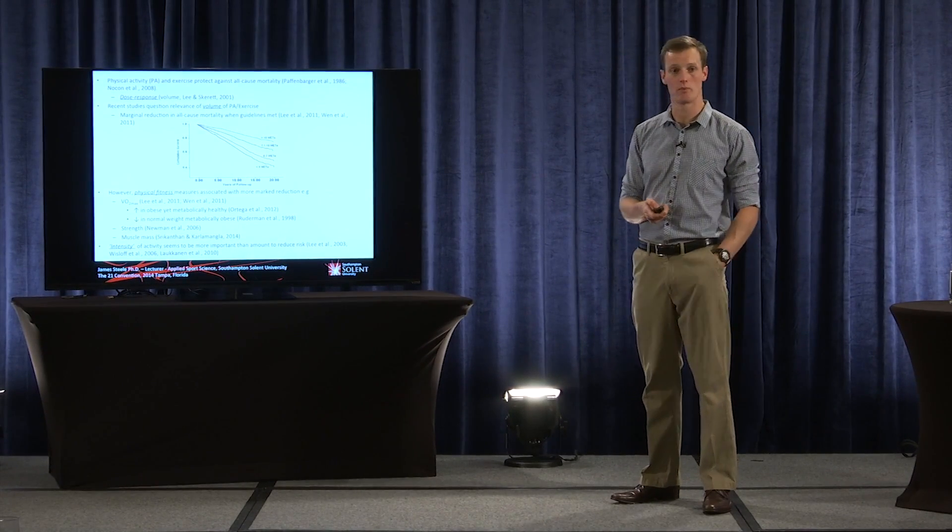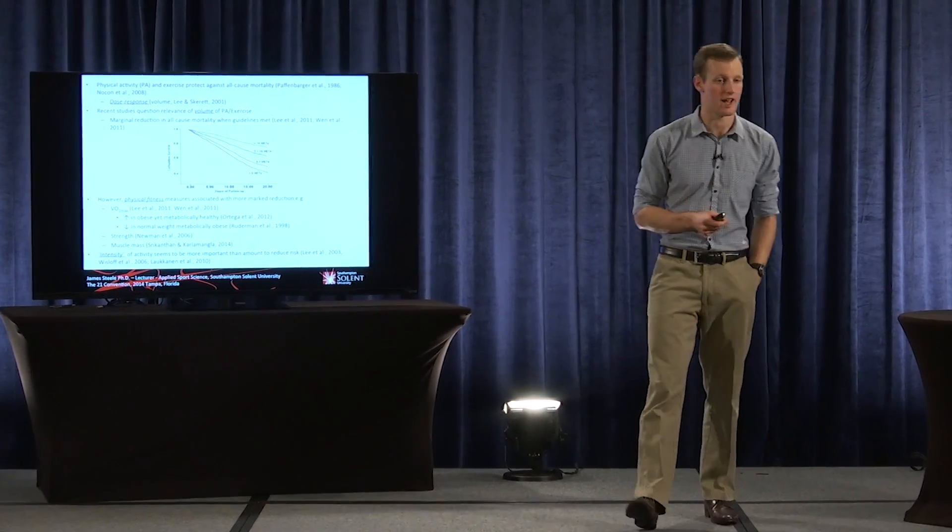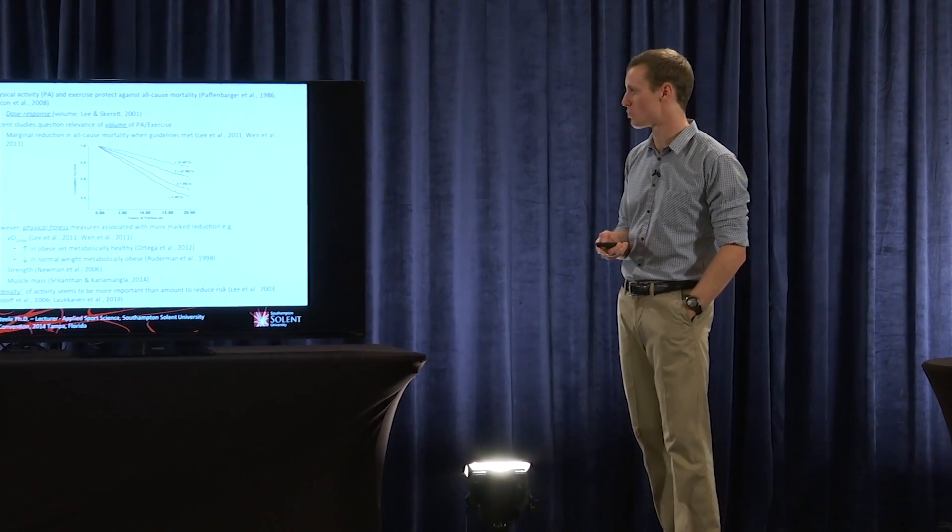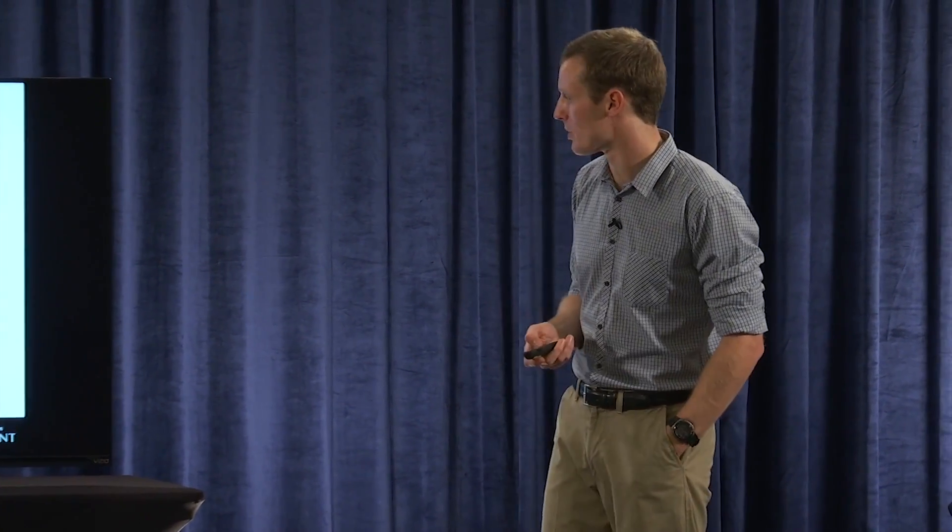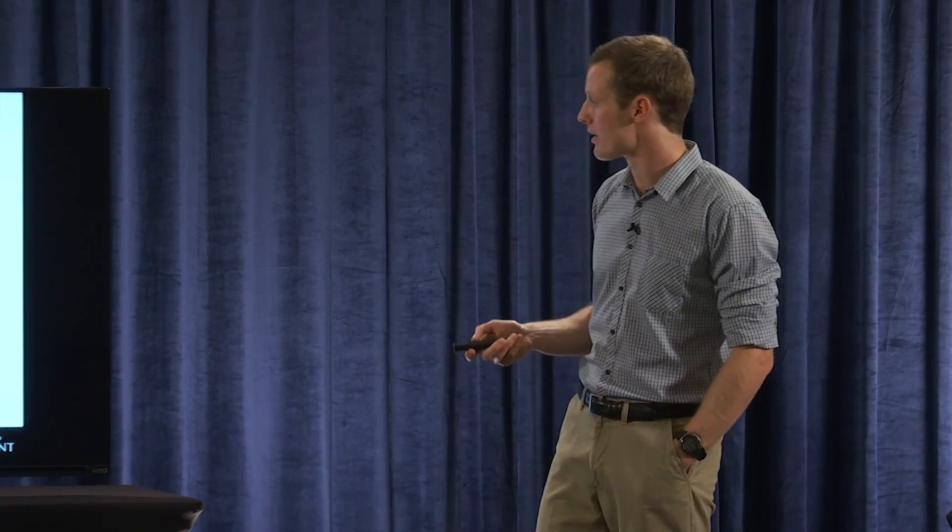So for example, VO2 max is one of the strongest predictors of cardiac disease, morbidity and mortality as well. We tend to see that VO2 max is higher in the obese yet metabolically healthy and lower in those who are normal weight but metabolically obese. Even strength and muscle mass are significant predictors of health and wellbeing and reduced all-cause mortality. So it seems to be that actually what's more important is the intensity of the activity.